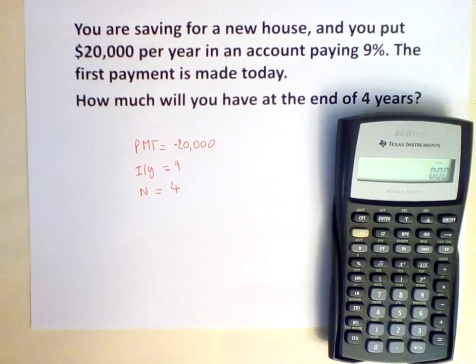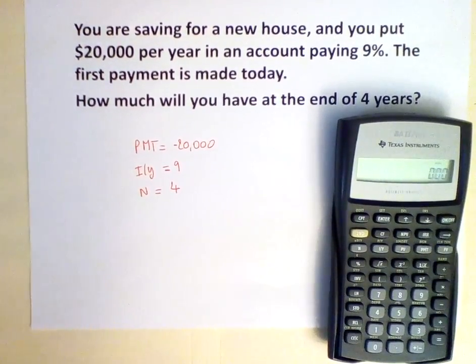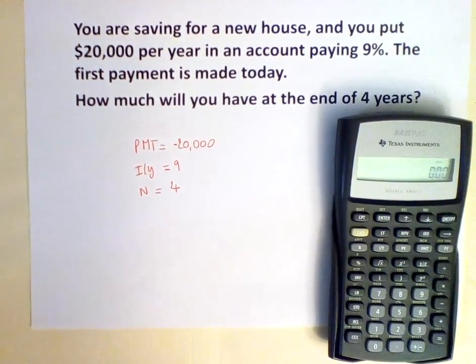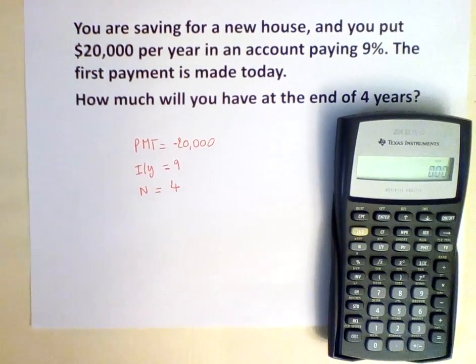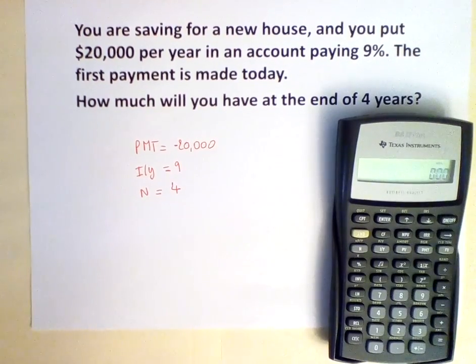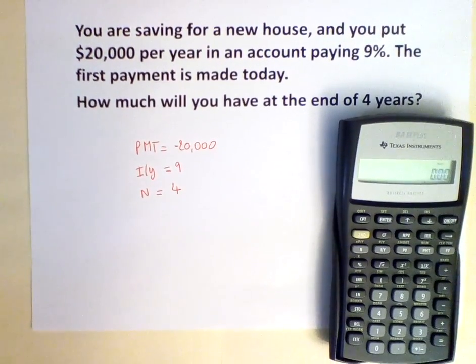The payment is $20,000, and given that this is a cash outflow, we have it as a negative number. The I over Y, or the interest rate, is 9%, so it equals 9. N is how many years we are investing, so N equals 4.